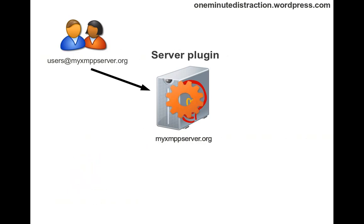Another common way of developing services is to develop server plugins. Most XMPP servers have some sort of a plugin framework that allows you to do a lot of things. One of the things it allows you to do is to extend the server or provide additional functionality. You write the services using the API provided by the server and then install it with the server. So when the server starts up, it will start up all these additional services as well.